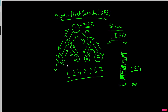Four doesn't have any child so we won't add anything. Next we'll pop five — five doesn't have any child so we won't add anything. Now when we pop, three will be popped out, and we'll add the children of three which are six and seven. When we pop, six will be popped out and added to our result. Six has no child, we don't add anything, and then we pop seven, add it, add nothing.